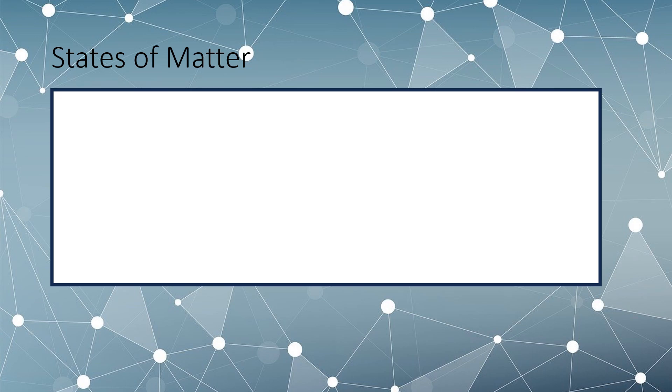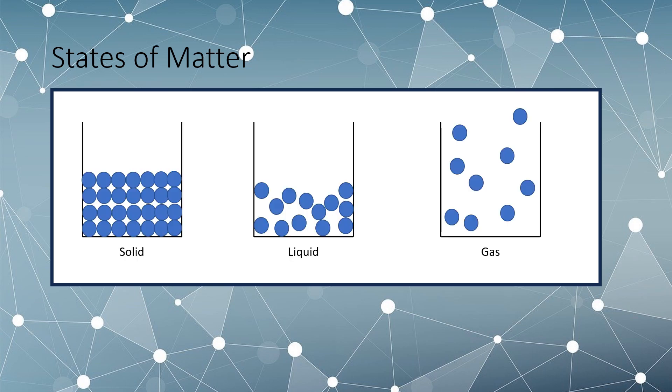There are three main states of matter: solid, liquid and gas. You would have encountered many of these throughout your everyday life and water is the most common one we discuss. Let's get into each state of matter and discuss more about it in detail.